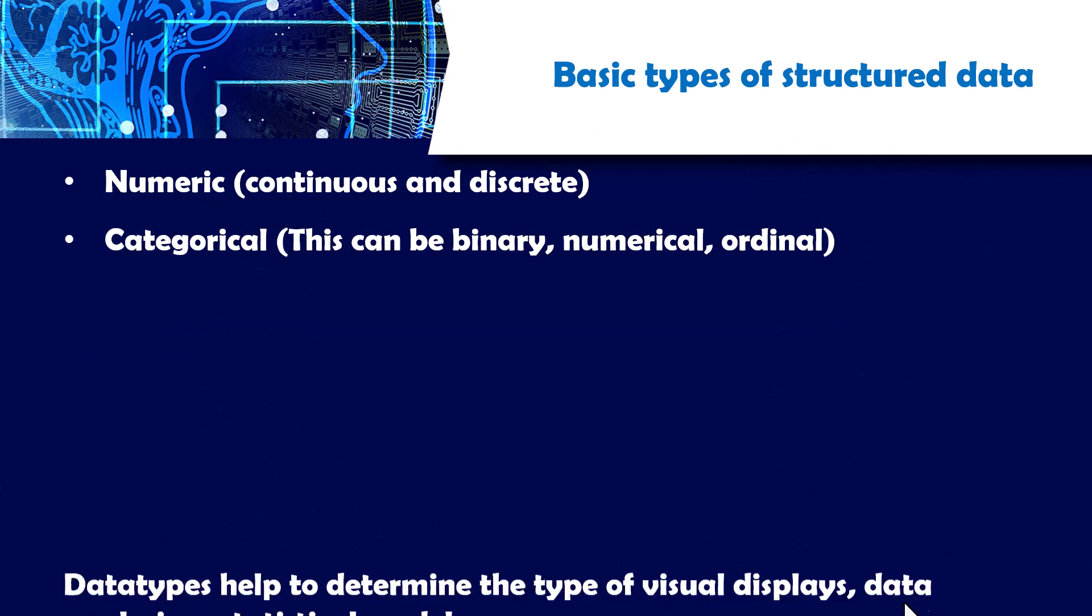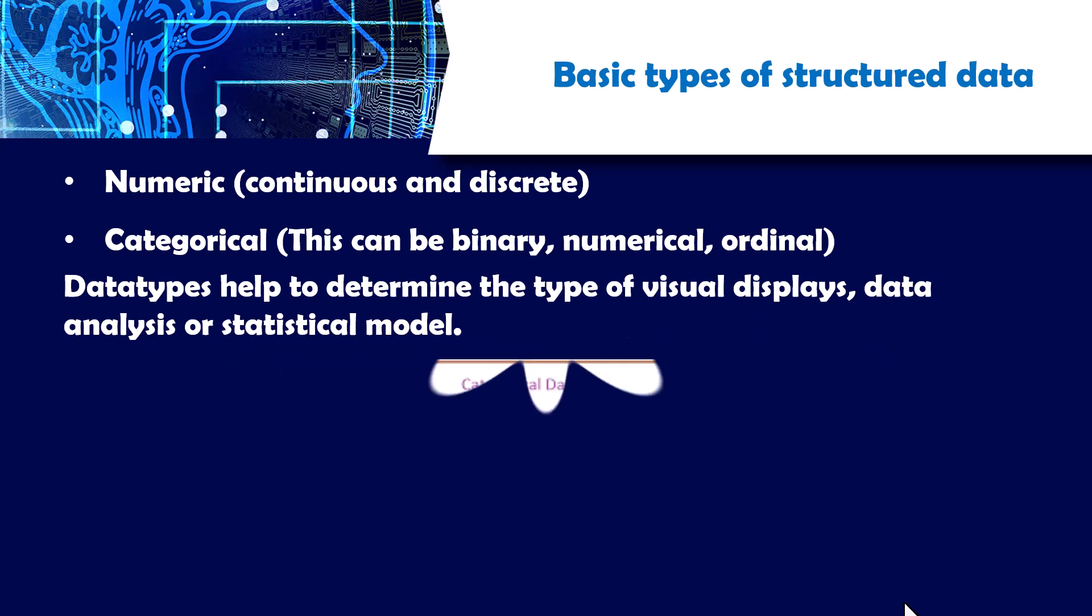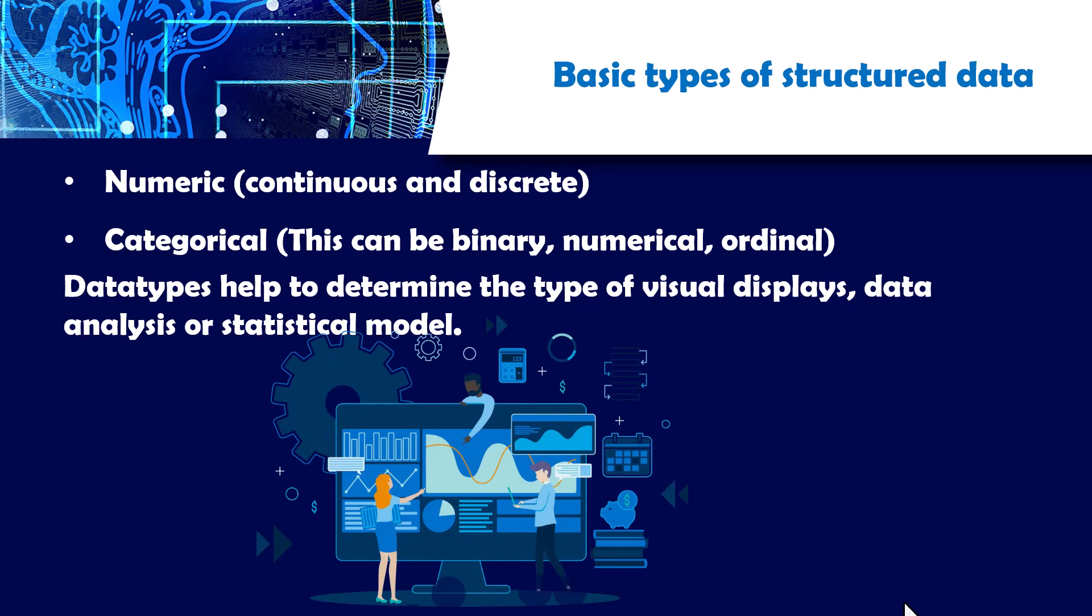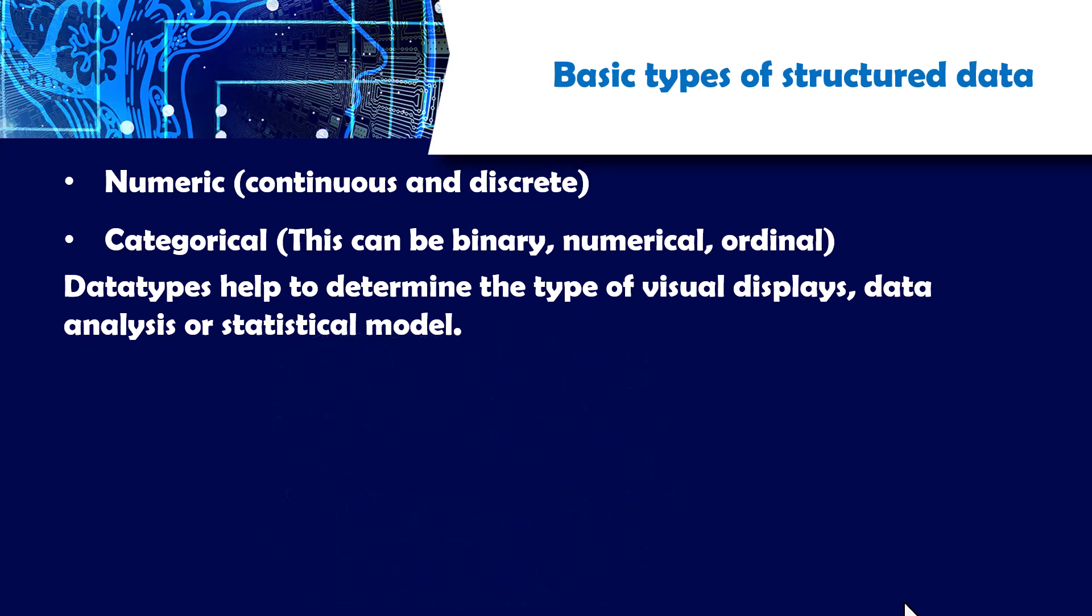Data types help to determine the type of visual displays, data analysis, or statistical model. For example, if you have categorical data you wouldn't employ a histogram to visualize it. You would rather employ maybe a bar graph or a pie chart and so on. Then when it comes to statistical model, the data type would determine so much which statistical model you're going to use for your analysis. For example, continuous data in form of an outcome would call for a linear regression model.